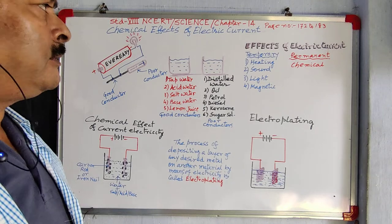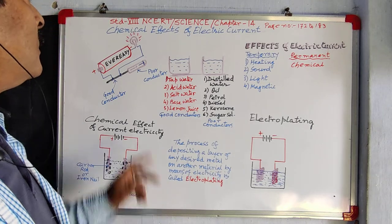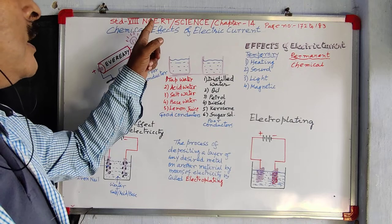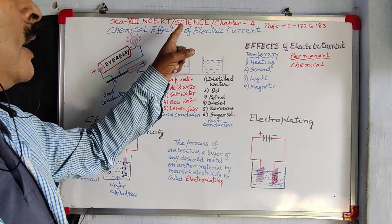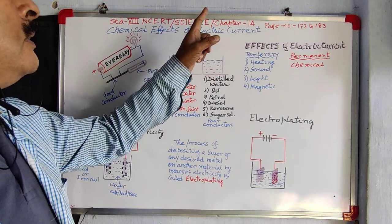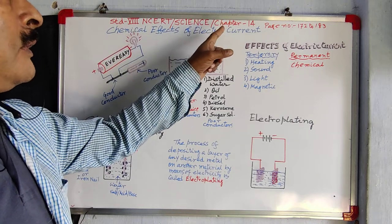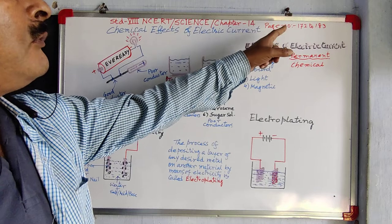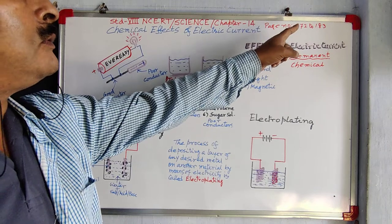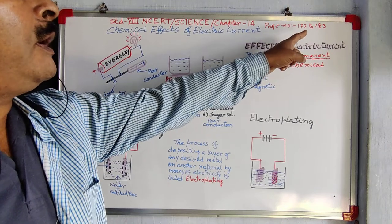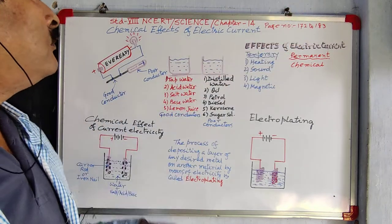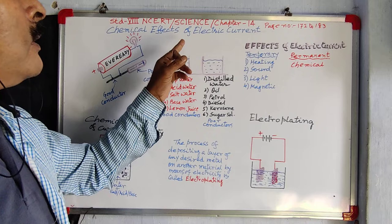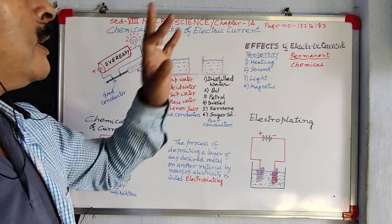Today's lesson: Standard 8 NCERT Science, Chapter 14, page number 172 to 183, Chemical Effect of Electric Current.